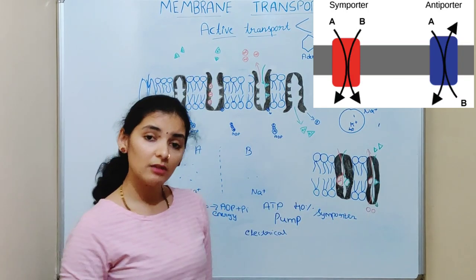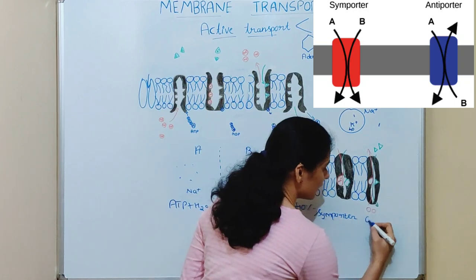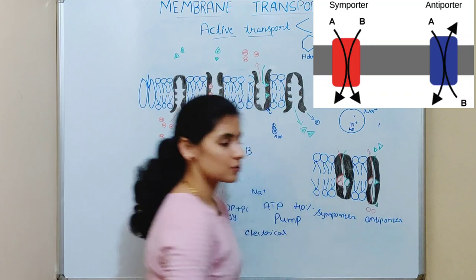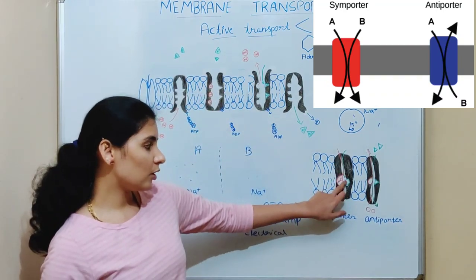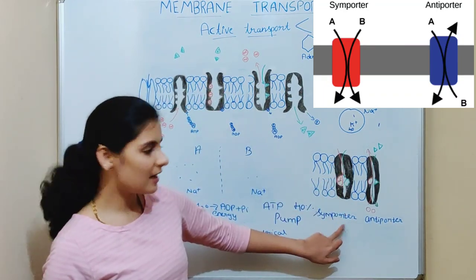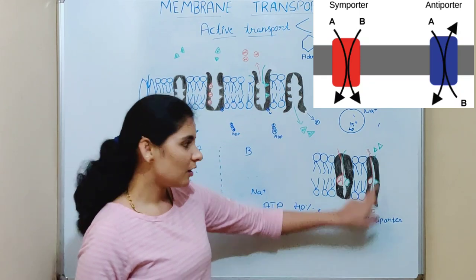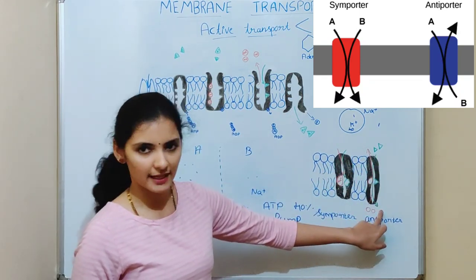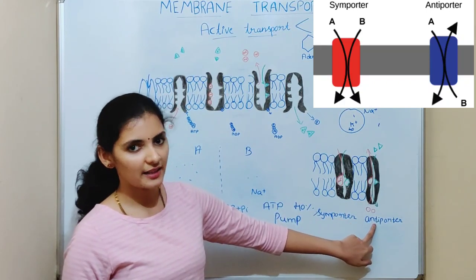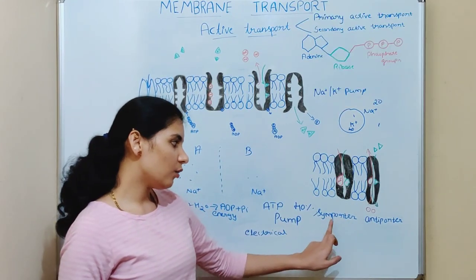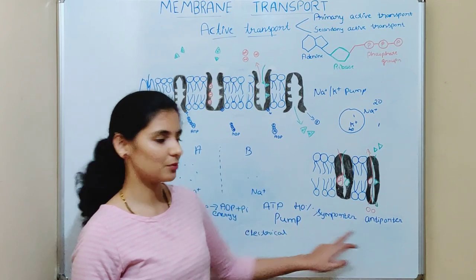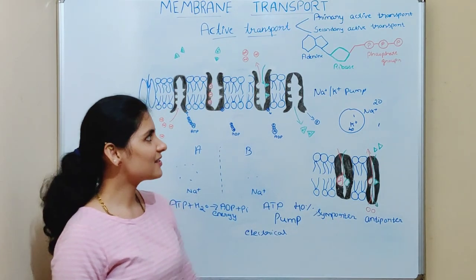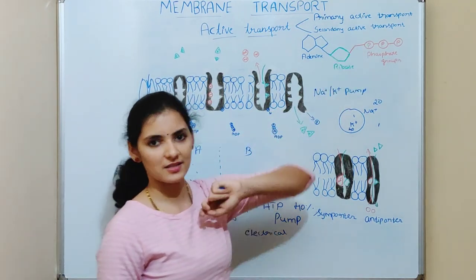If the molecules move in opposite directions, it is called an antiporter. In a symporter, both molecules move inside the cell. In an antiporter, one molecule moves outside the cell and one molecule moves inside the cell. In both symporter and antiporter, the movement is driven by the electrochemical gradient.